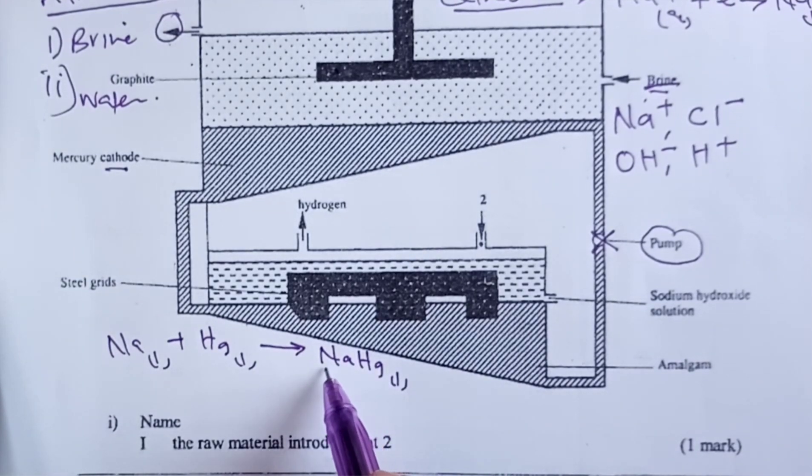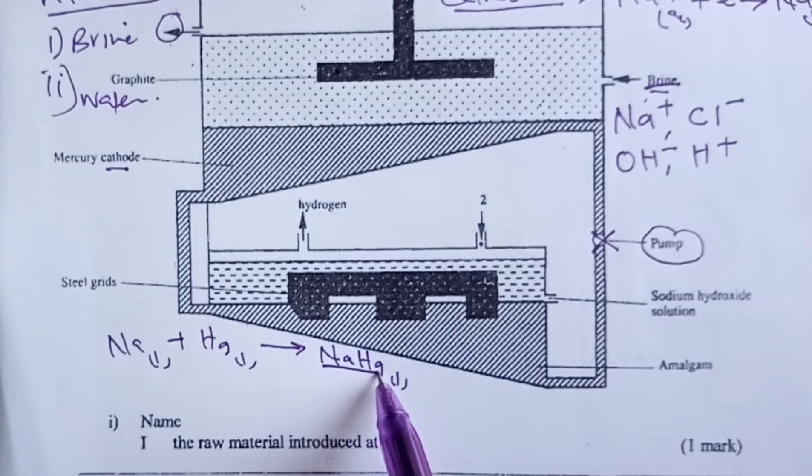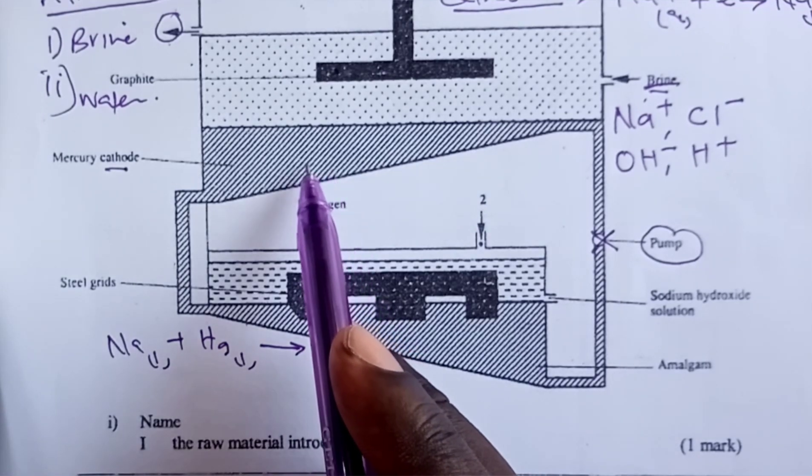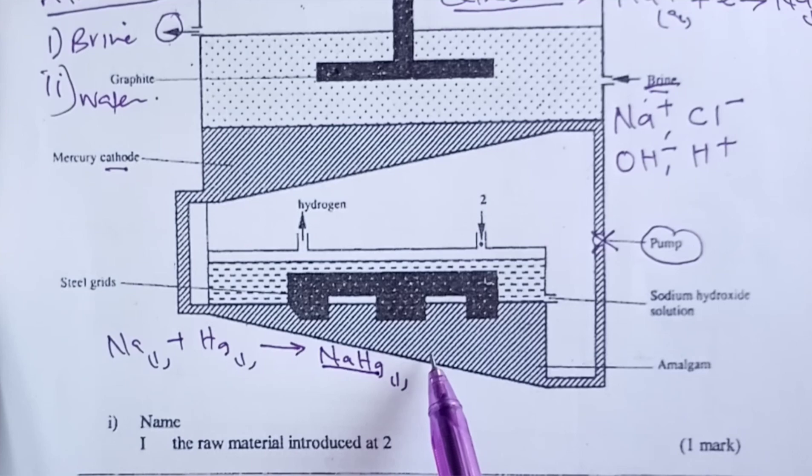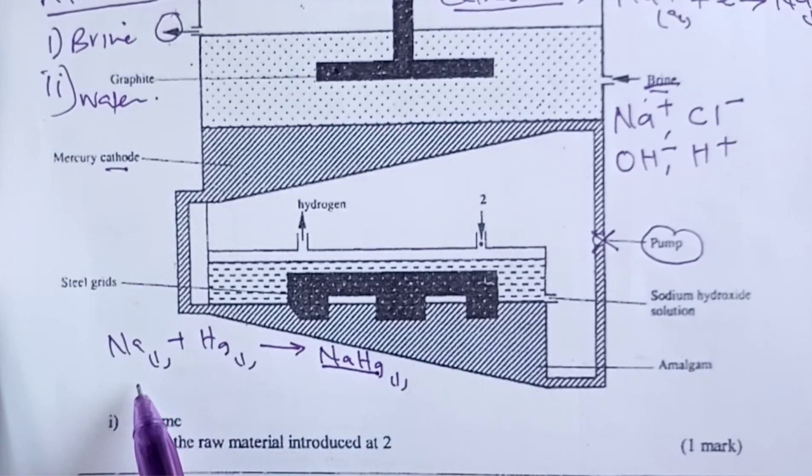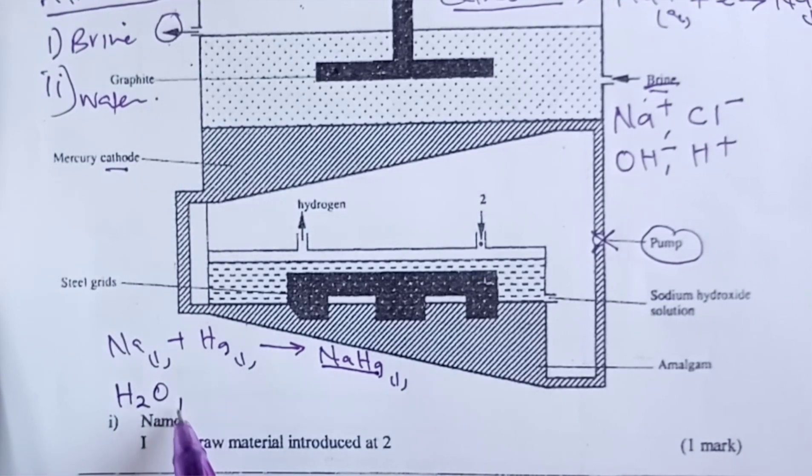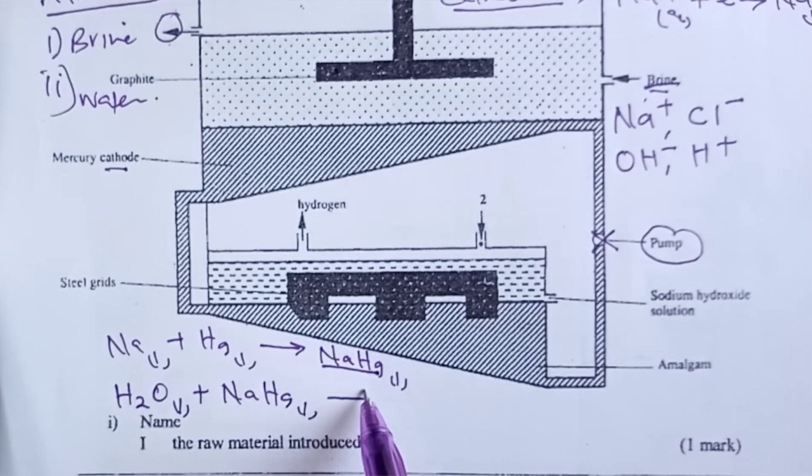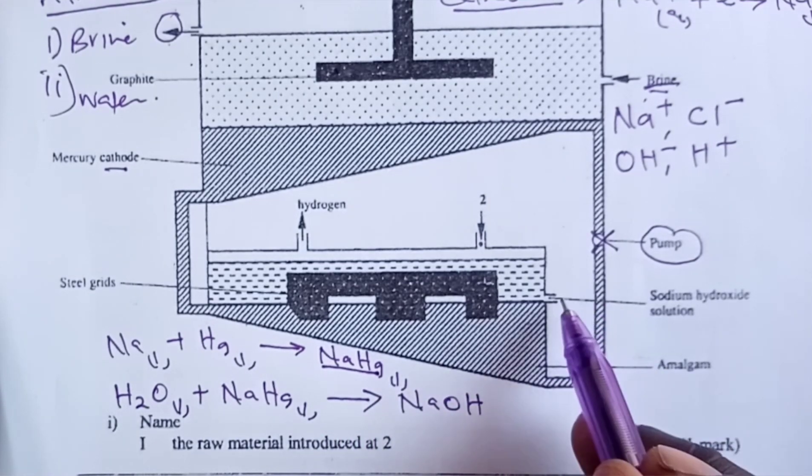Now once this amalgam has been formed, it moves with the mercury column to our downer cell, where we introduce water. When we introduce water, water will react with the sodium mercury amalgam.